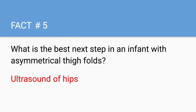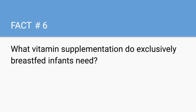What is the best next step in an infant with asymmetrical thigh folds? An ultrasound of the hips. Asymmetric skin folds described in this question can be seen in developmental dysplasia of the hip. In these patients you can feel a clunk on the Ortolani test. It is preferred to do an ultrasound rather than an X-ray because of the safety profile. These patients can be treated with a Pavlik harness to prevent limb length discrepancies as they get older.